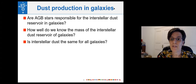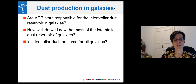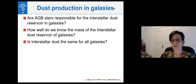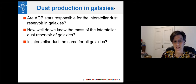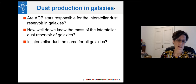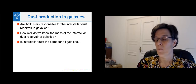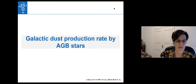A lot of my research has focused on this question. There are three science questions I want to focus on in this talk. The first is: to what extent are AGB stars actually responsible for the interstellar dust of galaxies? I'll demonstrate this based on studies of nearby galaxies, in particular the Magellanic Clouds. On the other side of the equation: how well do we actually know the masses of the interstellar dust reservoir in galaxies? And finally, an important key: is the assumption that interstellar dust is the same for all galaxies actually valid?